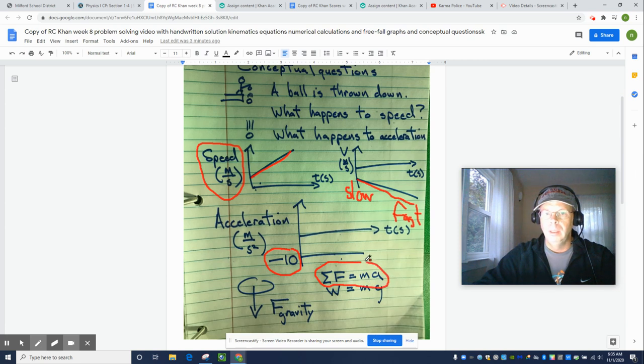Why? Well acceleration is directly proportional to force and so if there's only one force there must be an acceleration. You can't have balanced forces if there's only one force and so all projectile motion is accelerated motion.